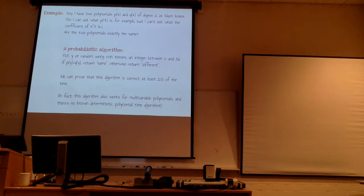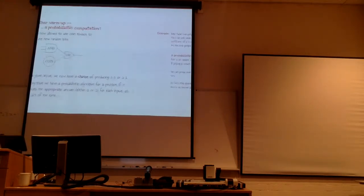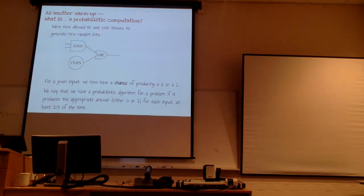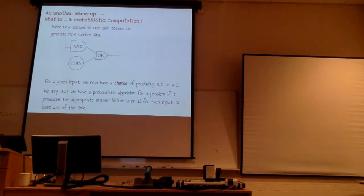You need to check if two polynomials are the same thing — I was kind of amazed by that. So here's a probabilistic computation where we use coin tosses along the way, and at the end we get a probability distribution of zeros and ones — some percent chance zero, some percent chance one. I think we're ready to jump in now and actually answer: what is quantum computation?